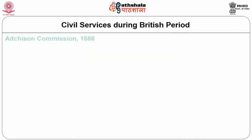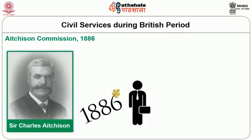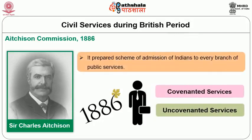The Atchinson Commission was appointed in 1886 and was headed by Sir Charles Atchinson. It prepared a scheme for the admission of Indians to every branch of public services and examined employment in Covenanted and Non-Covenanted Services.